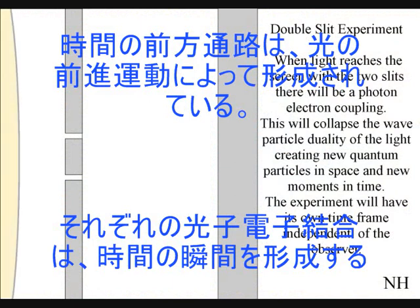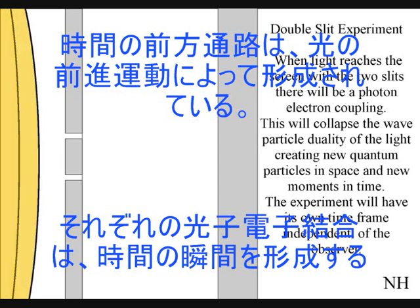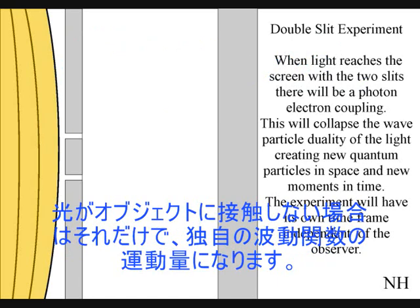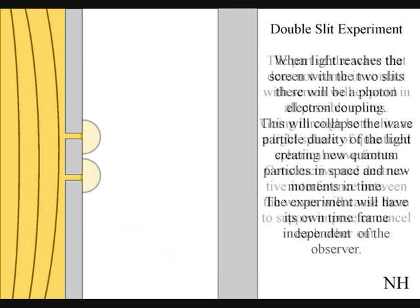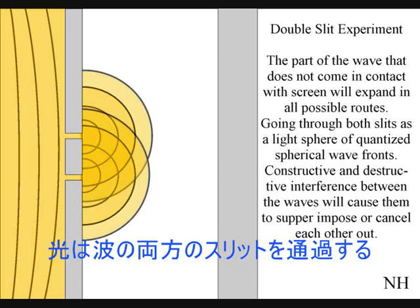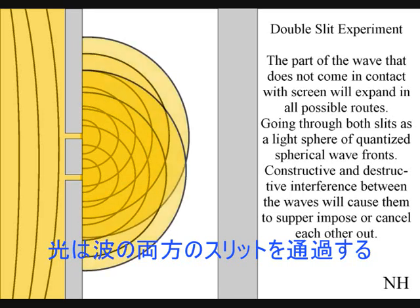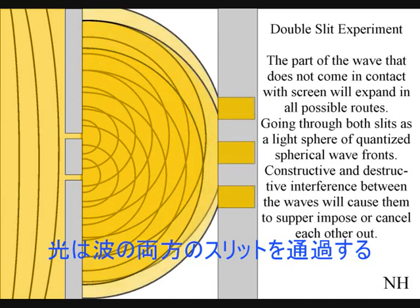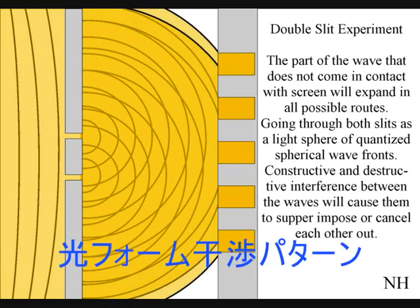When the light reaches the screen with the two slits, the photons will react with the electrons of the screen. This will collapse the wave-particle duality of the light, creating new quantum particles in space and new moments in time. The part of the wave that does not come in contact with the screen will expand in all possible routes, going through both slits. Interference between the waves will cause them to superimpose or cancel each other out. When this wave function comes in contact with the screen, it will collapse, creating moments of time and quantum particles in the shape of an interference pattern.